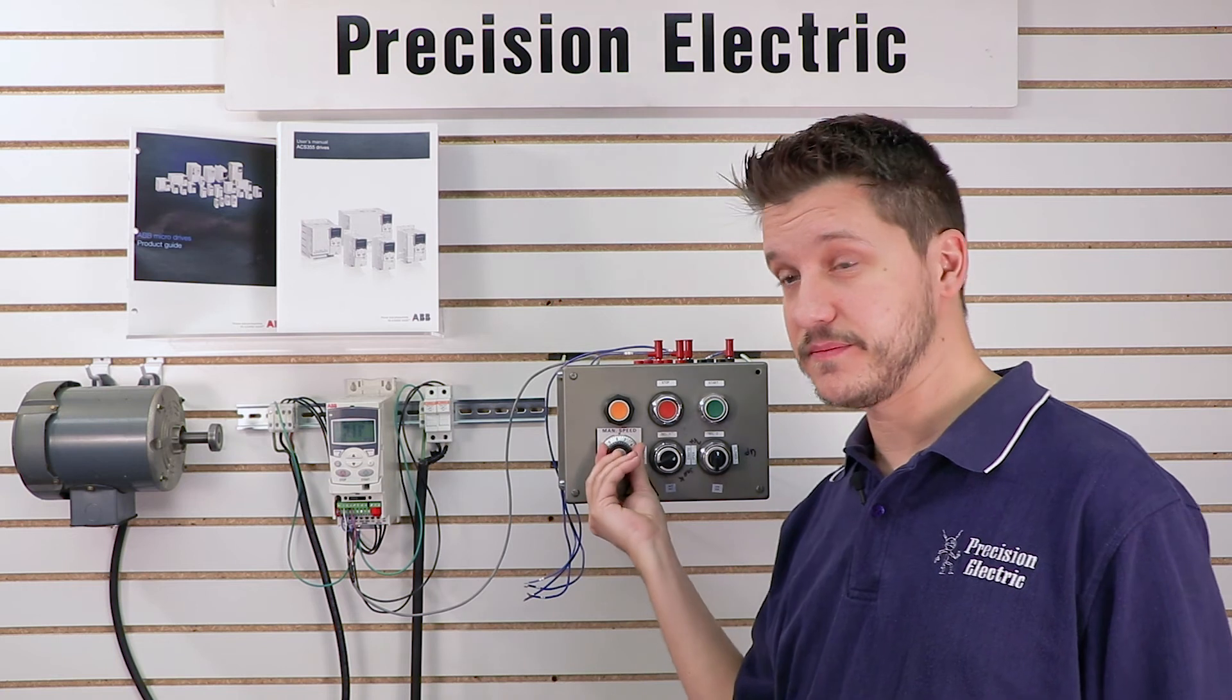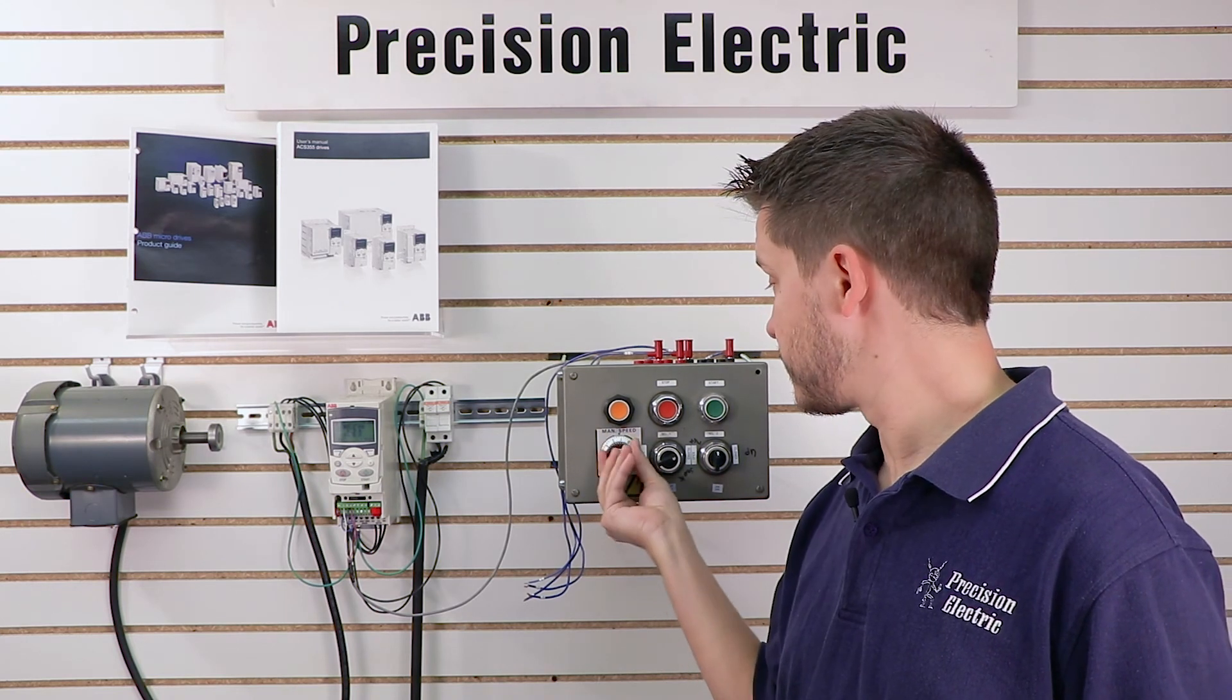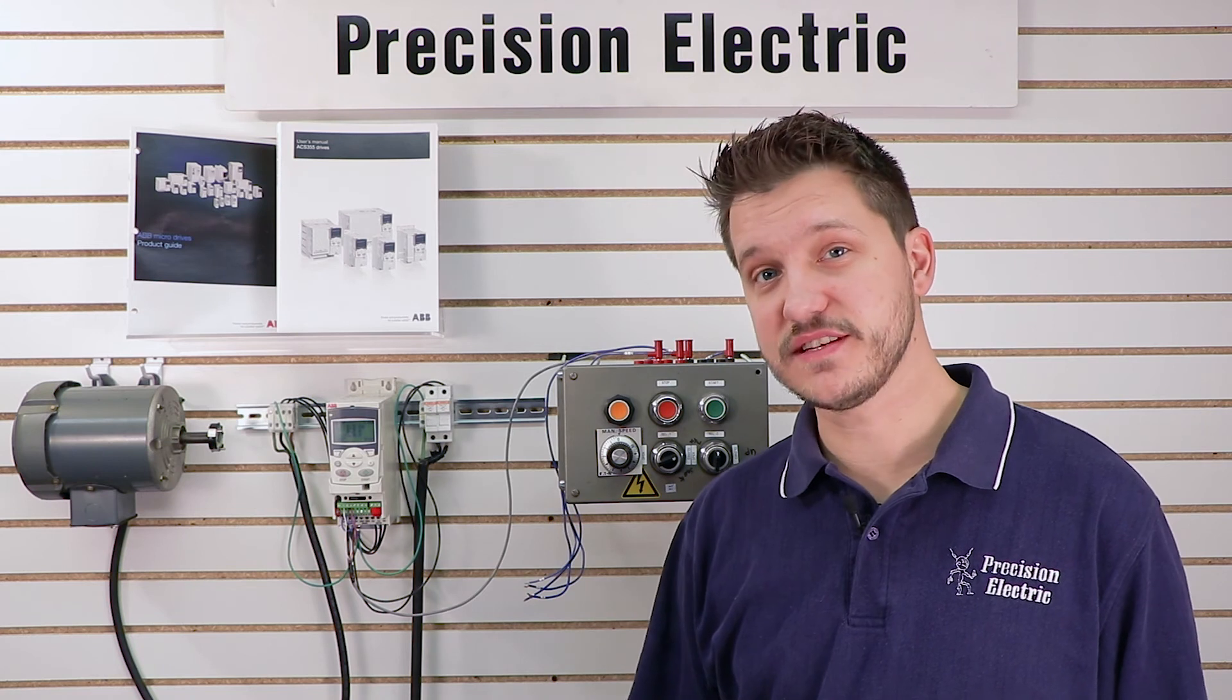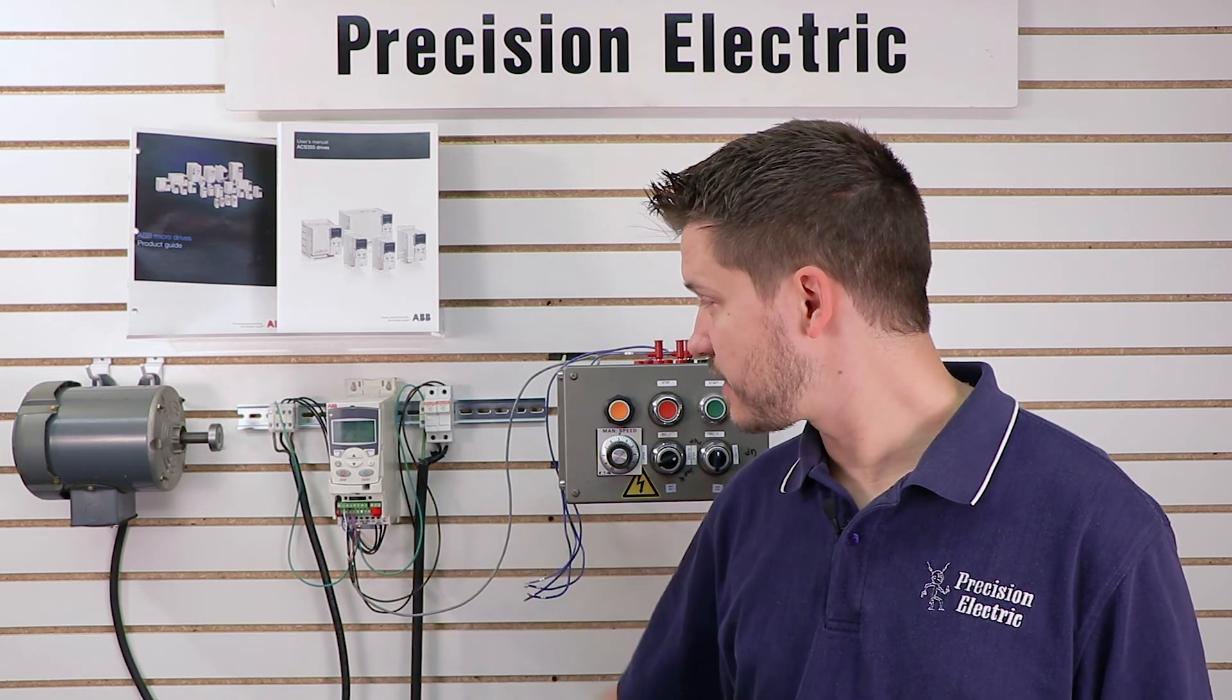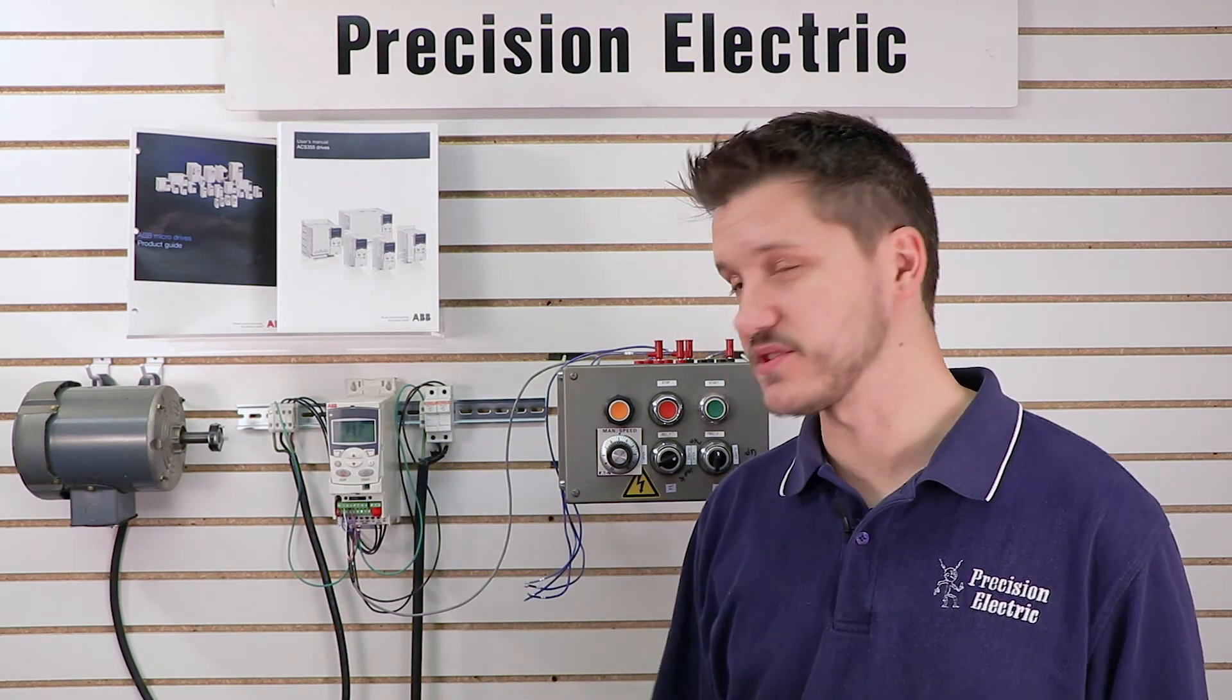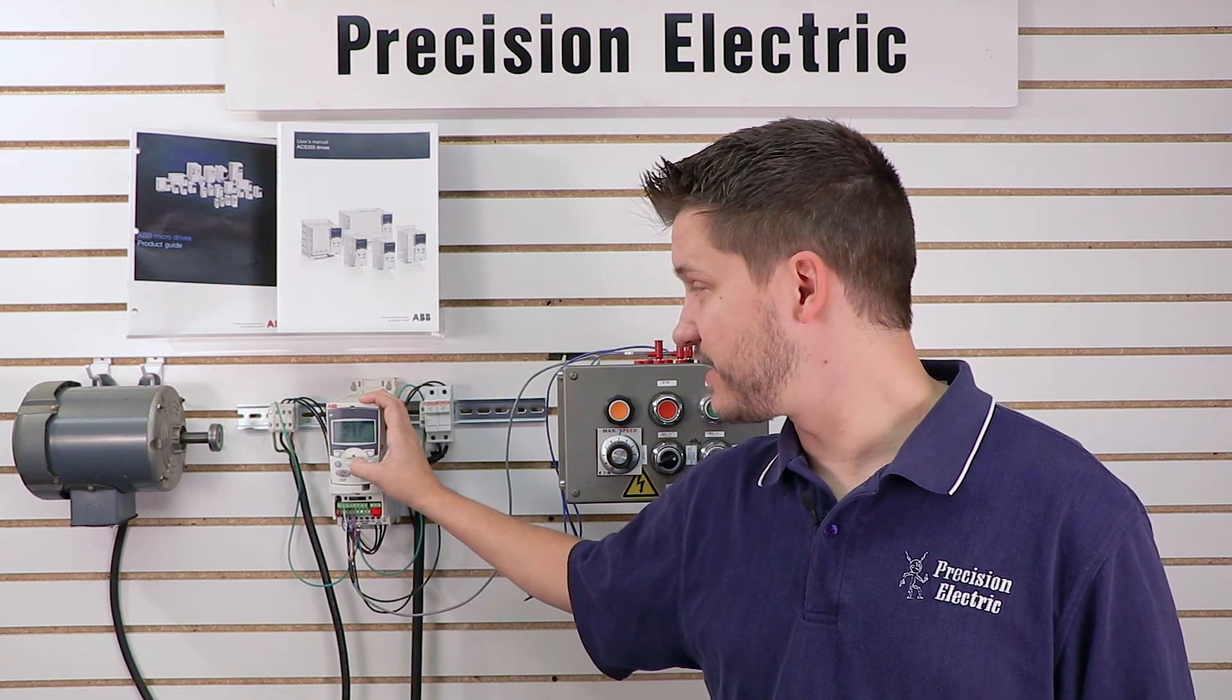So now I can actually turn it up - so there's full speed - and I can turn it all the way down if I want. It just sits there. If I want to switch back to my keypad control, I can just press local remote again, and I'm actually back in keypad control. I want to start it, press the start command, and I can now use the up and down arrow keys that control the speed on the keypad.